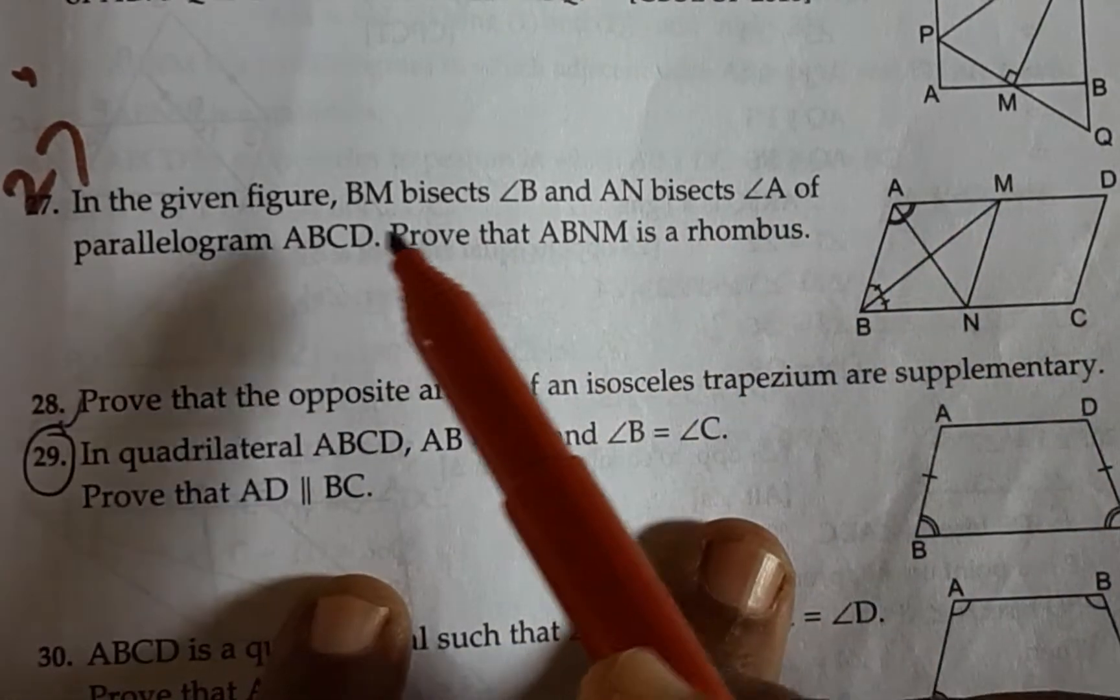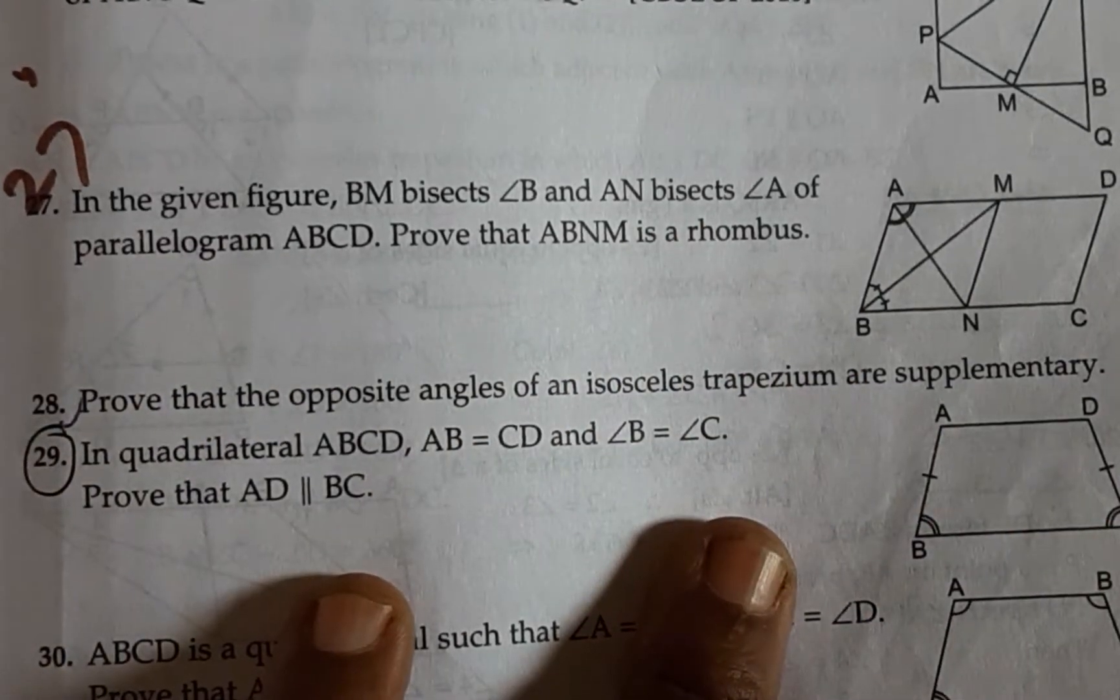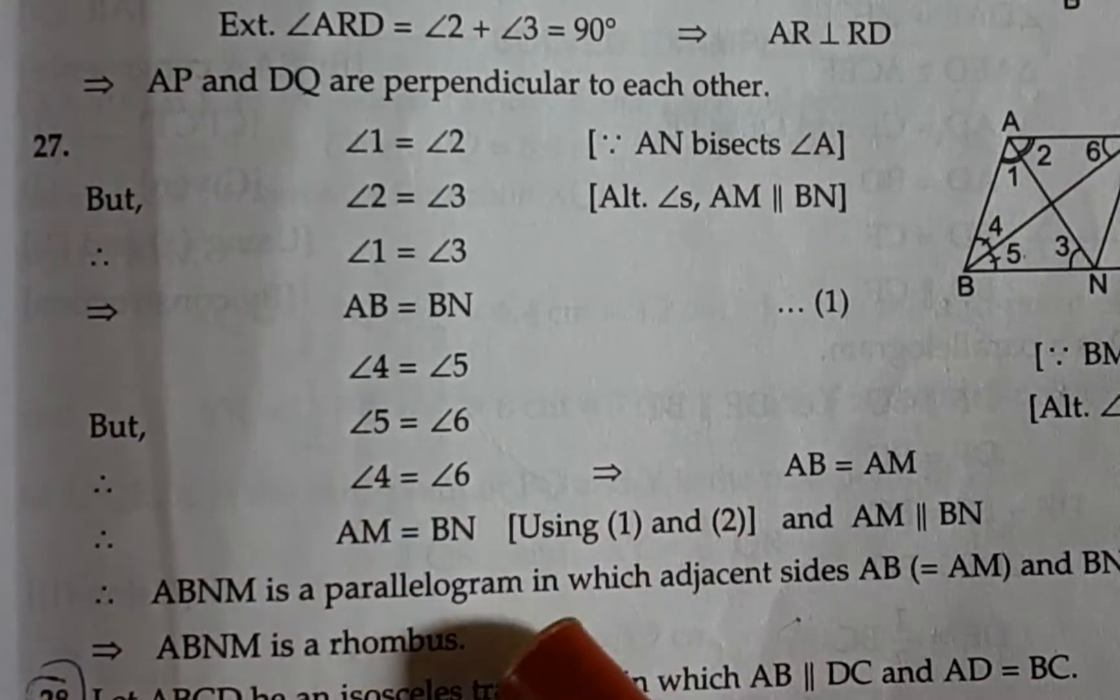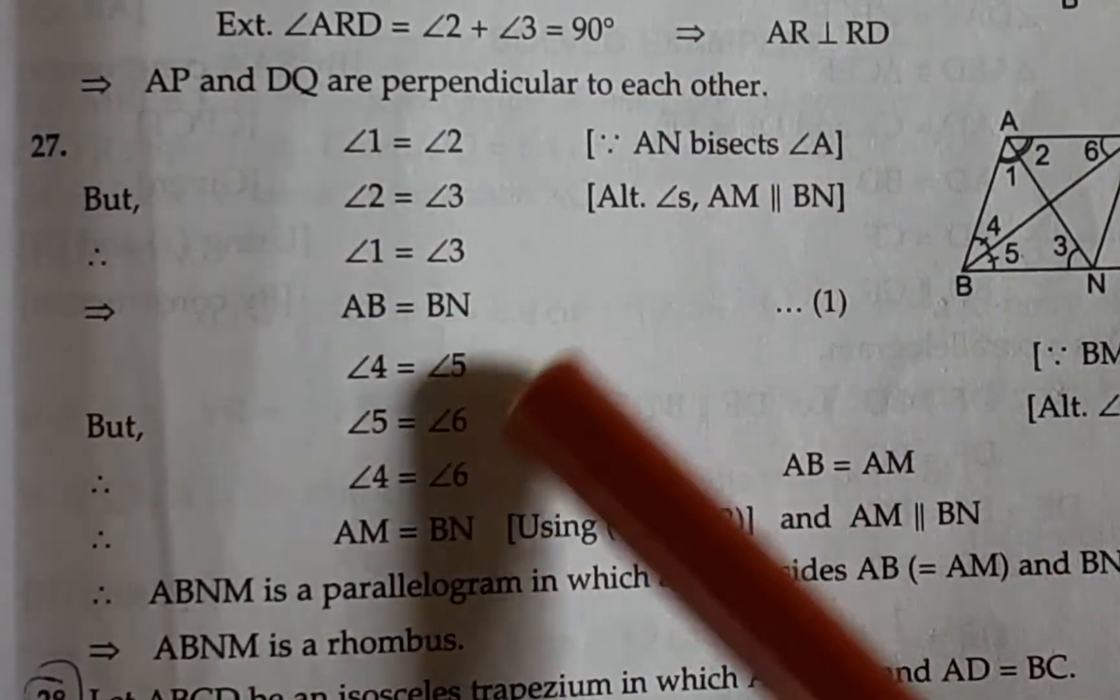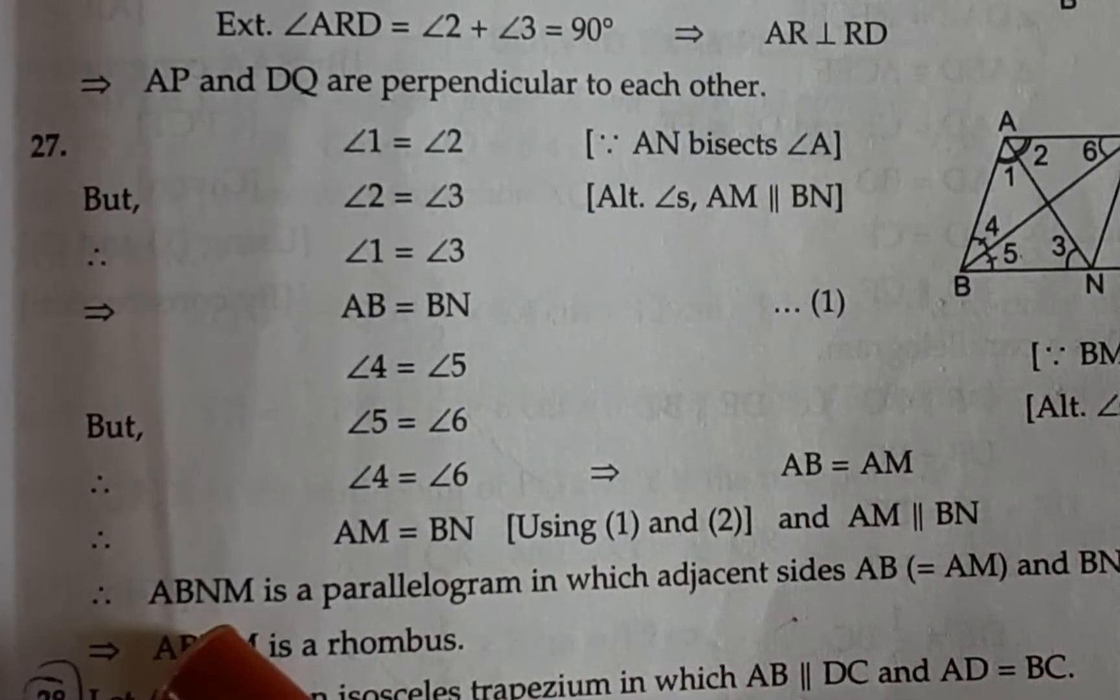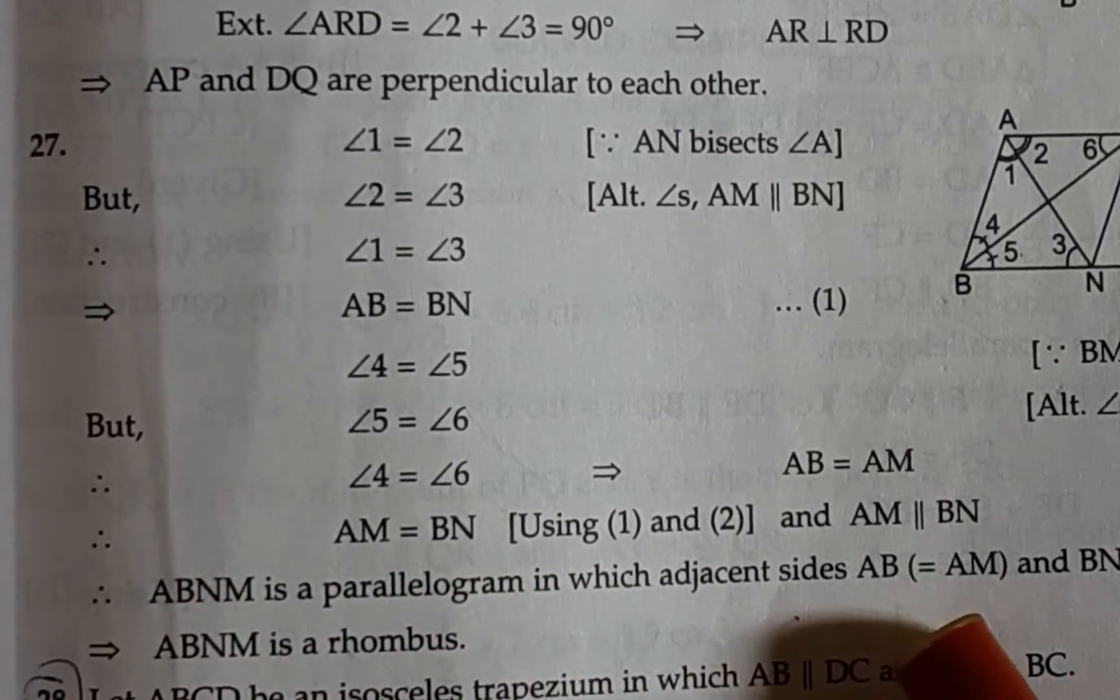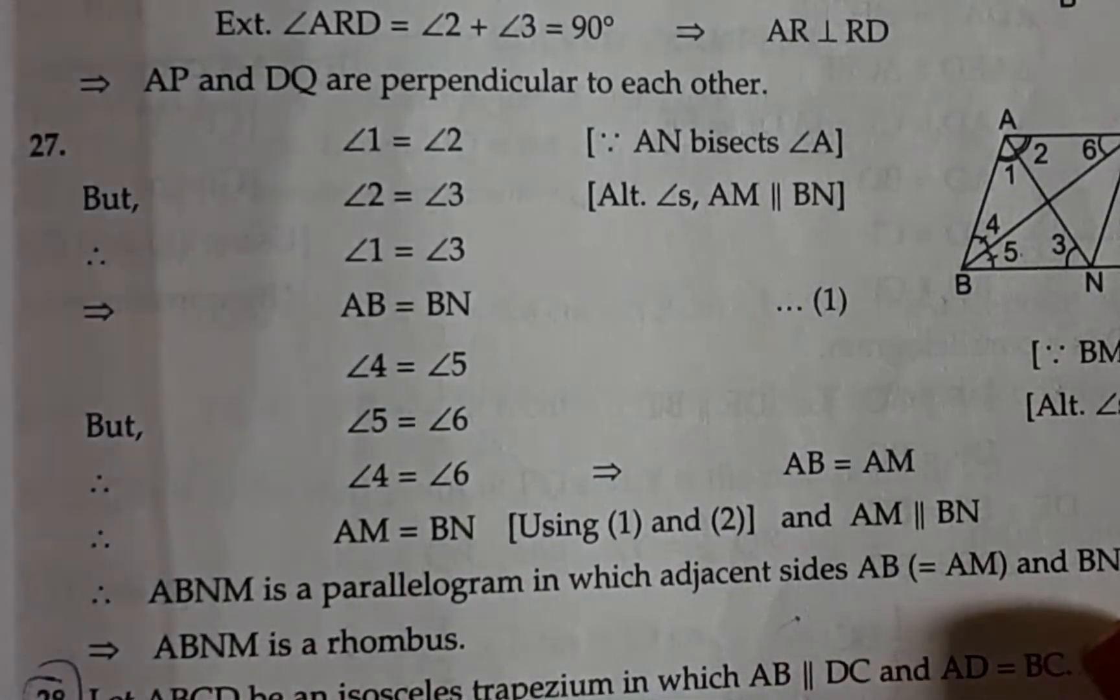Here in the hint section, it has been worked out for you in the textbook, stating that this would have sufficient proof that AB equals AM and BN are equal.